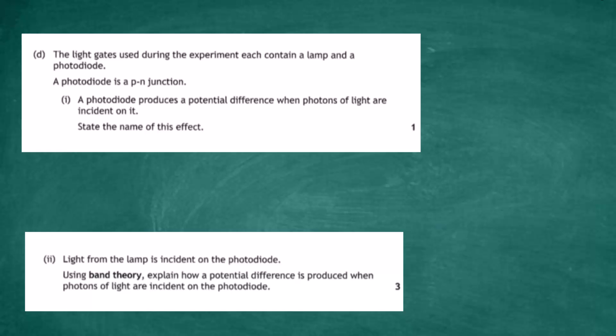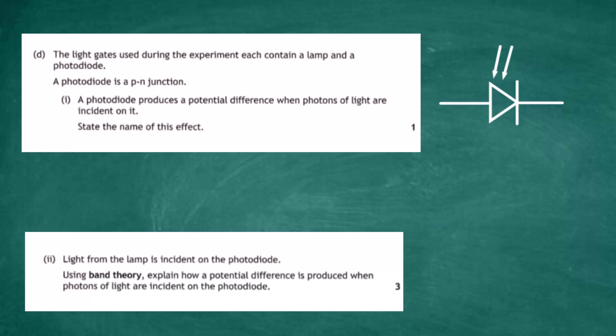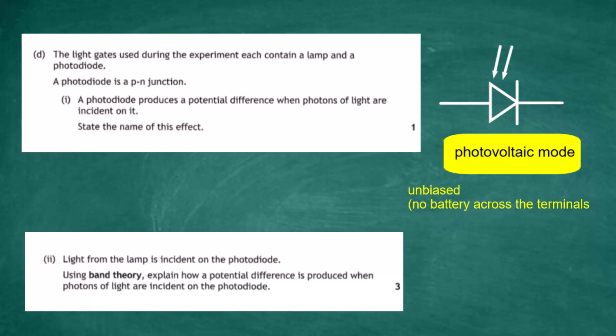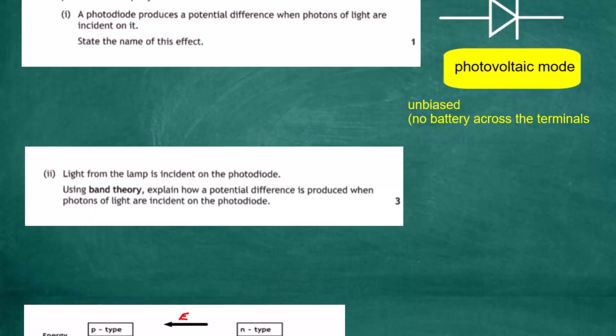Question three part d: the light gates each contain a lamp and a photodiode. A photodiode is a p-n junction that produces a potential difference when photons of light are incident on it. The name of this effect is the photovoltaic effect. The photodiode is unbiased — there is no battery across its terminals. It is the action of photons arriving in the depletion zone that creates a potential difference, so it operates in photovoltaic mode.